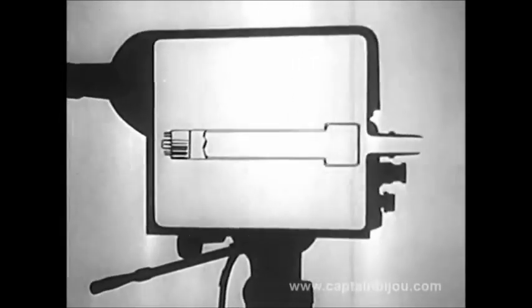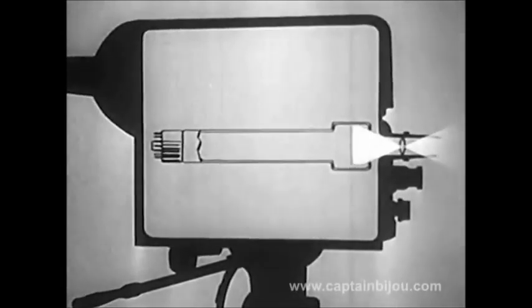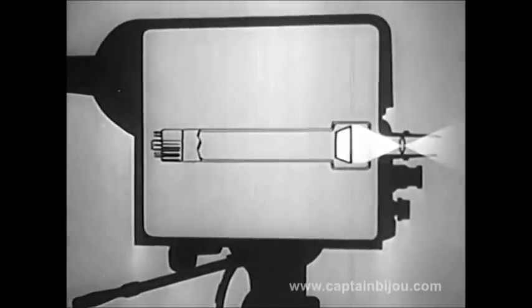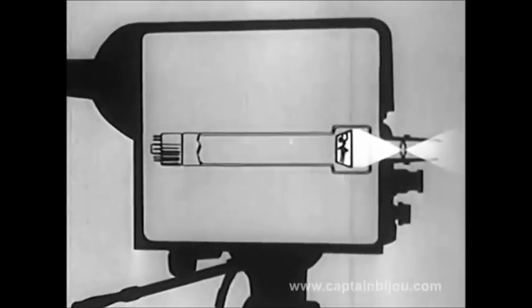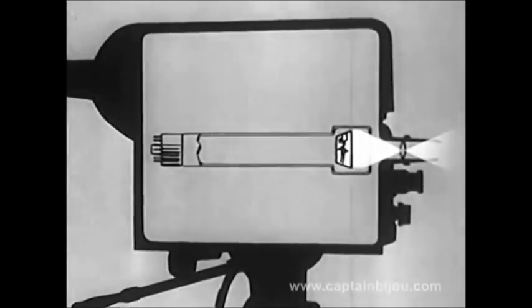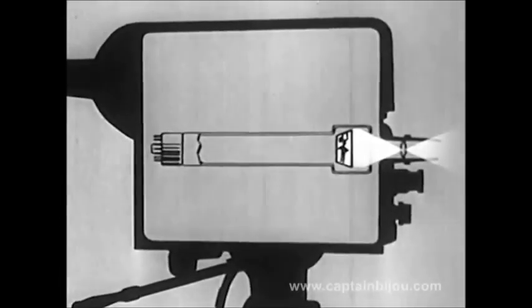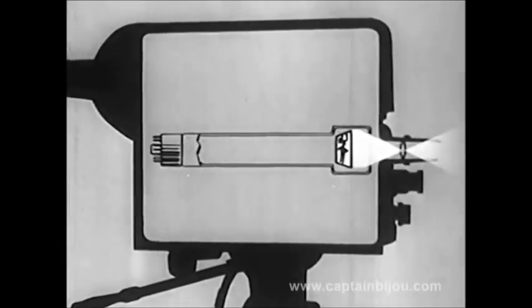The lens of the television camera acts like the iris of the human eye. It gathers in the light rays and focuses them on a mosaic of light-sensitive material that is built into the picture tube. The light-sensitive material converts the light into electrical impulses, a reaction varying with the strength of the light.